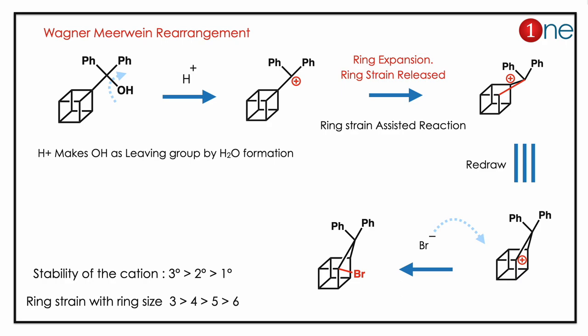If you redraw nicely, you have the cation at the adjacent carbon. Then the cation is quenched with bromine, so you have finally bromine addition.